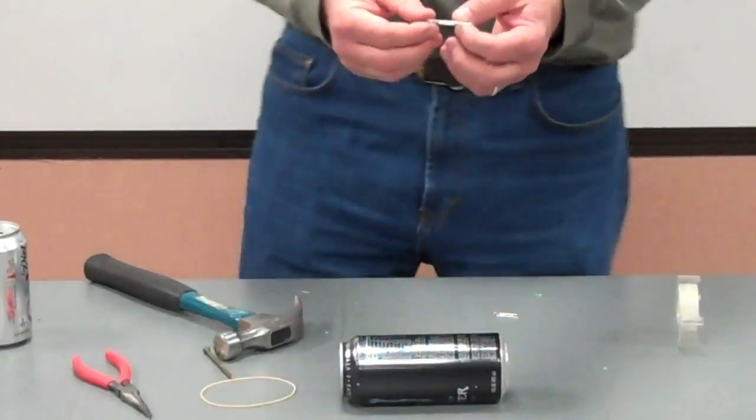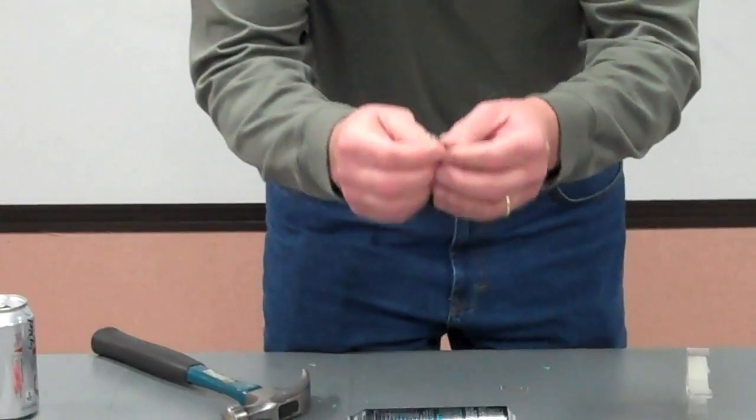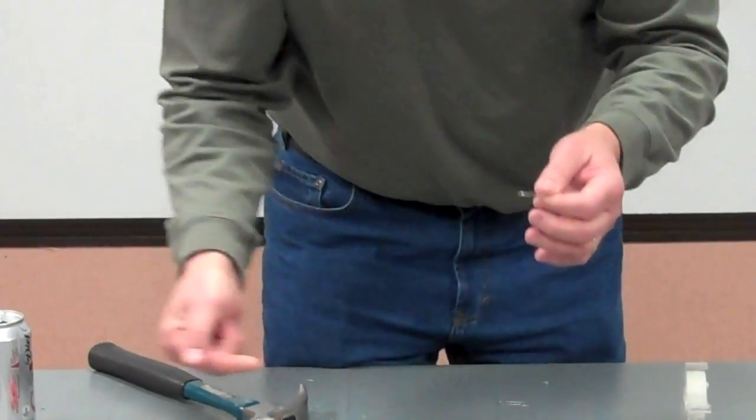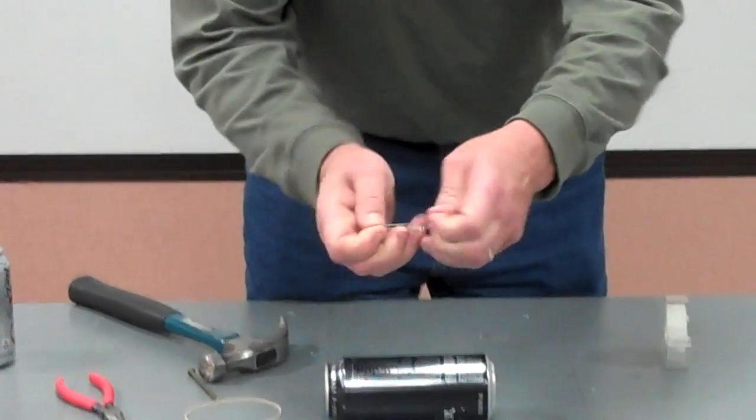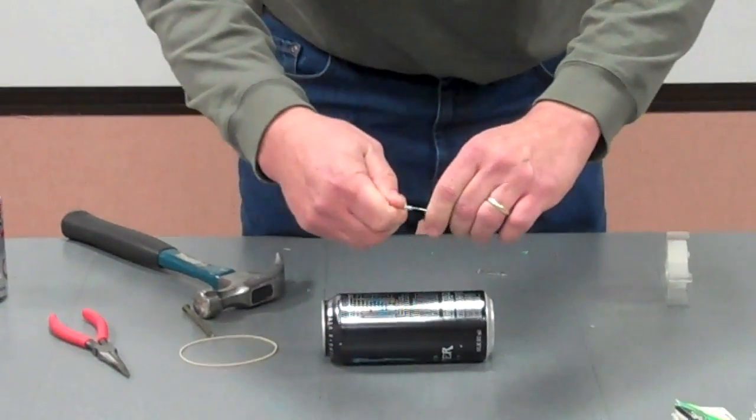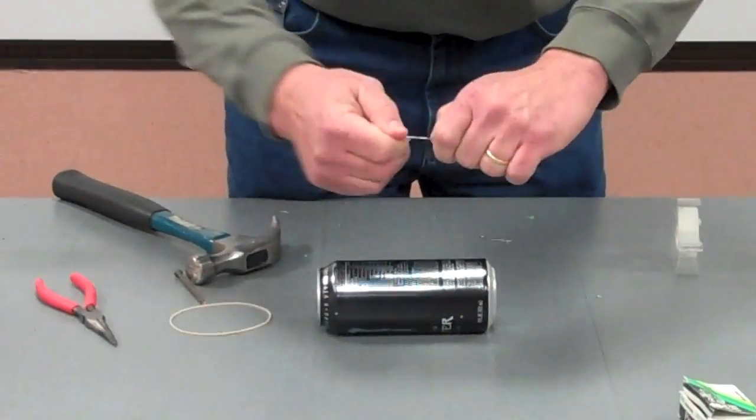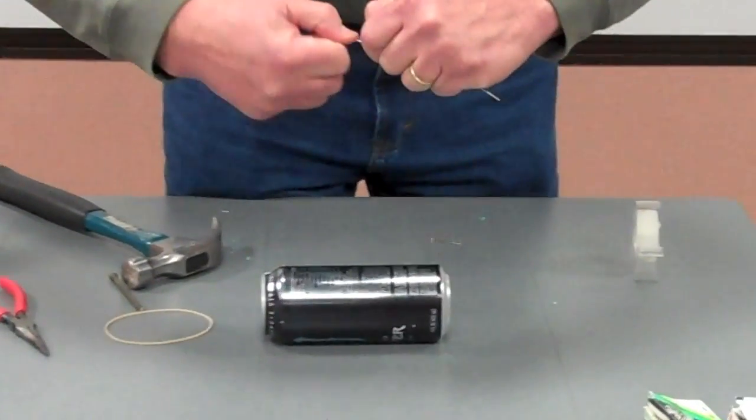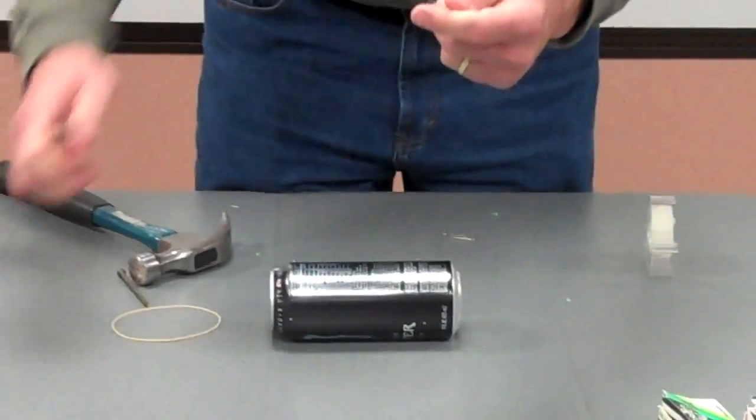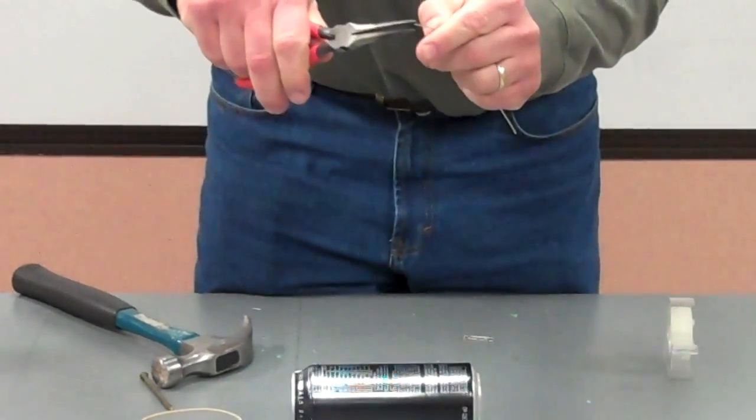Next thing you're going to do is take your large paper clip, and you're going to use this to hook your rubber band that's going to go through your can. So, what you're going to do with a large paper clip is open it up, all the way straight, all the way out.